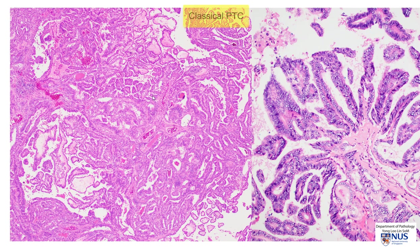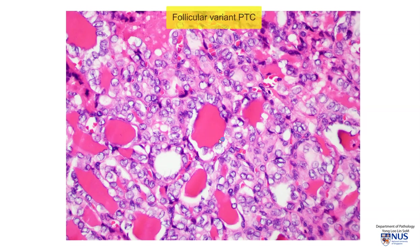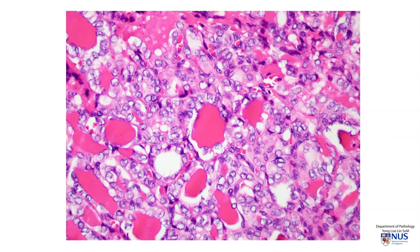Here is an example of classical PTC, and you can see the papillary structures. Some of them are quite edematous, and this is a higher magnification view showing the slender papillary structures. Here is an example of the follicular variant of PTC, where instead of papillary structures, we have follicles. These follicles are lined by cells still exhibiting nuclear features of PTC with enlarged oval nuclei with extremely pale, empty-appearing chromatin. We can also see a nuclear groove here.